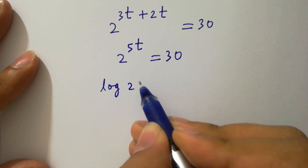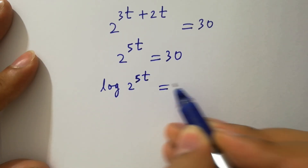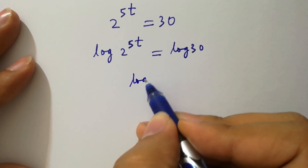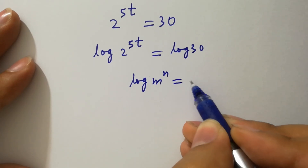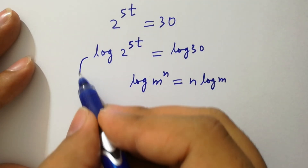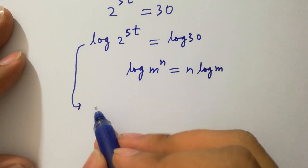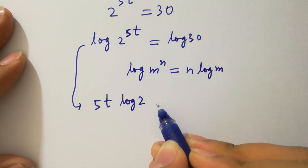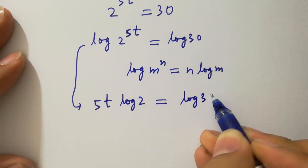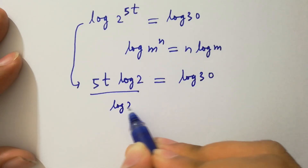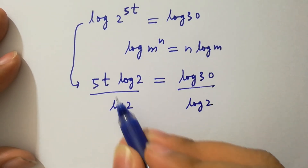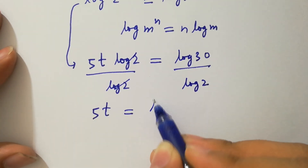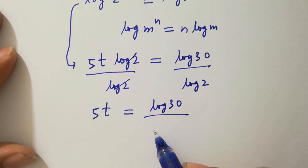To simplify this, take log on both sides. Using the rule log m to the power n equals n log m, it becomes 5t log 2 equals log 30. Dividing both sides by log 2, the log 2 terms cancel, giving us 5t equals log 30 over log 2.